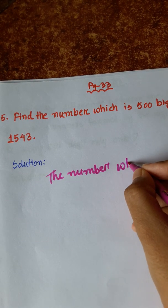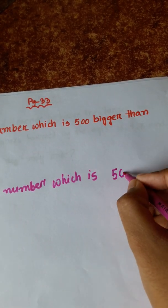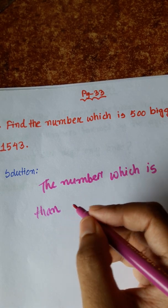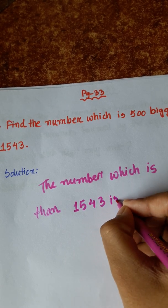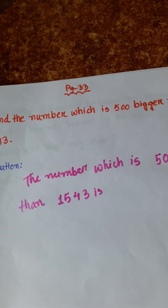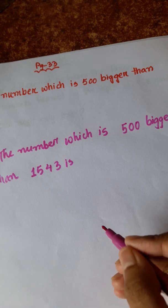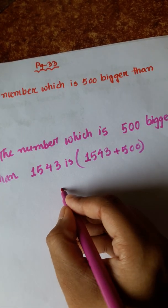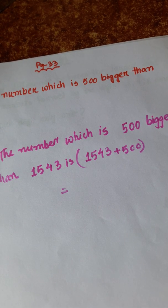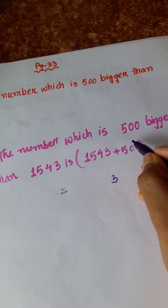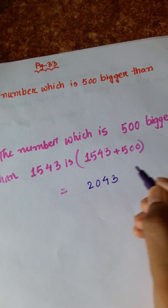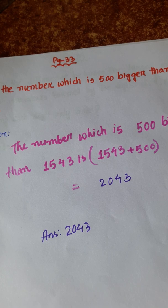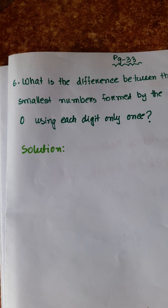The number which is 500 bigger than 1,543 - we can add to our number, so 1,543 plus 500. 3 plus 0 is 3, 4 plus 0 is 4, 5 plus 5 is 10, carry 1, 1 plus 1 is 2. 2,043. So the answer is 2,043.